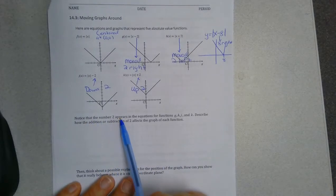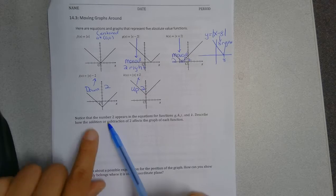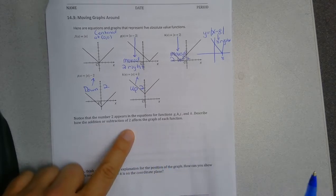So notice that the number two in the equations describe how the addition or subtraction affects the graph.